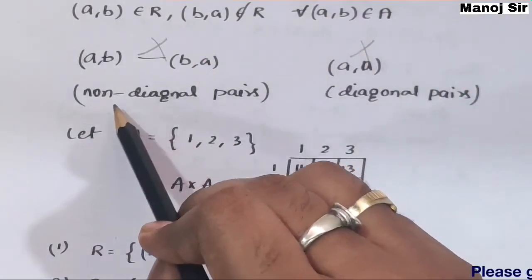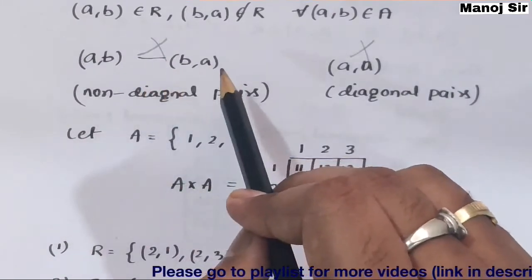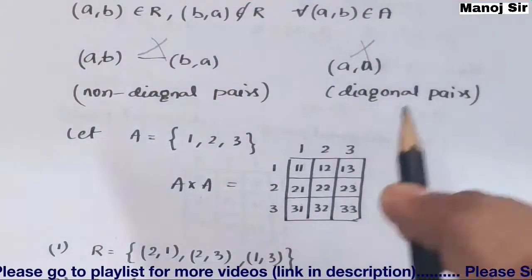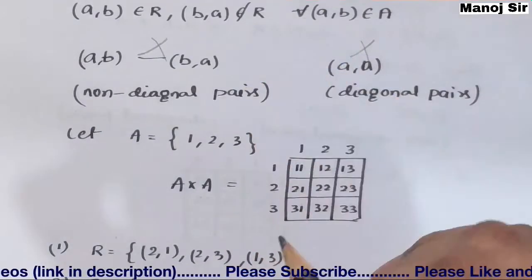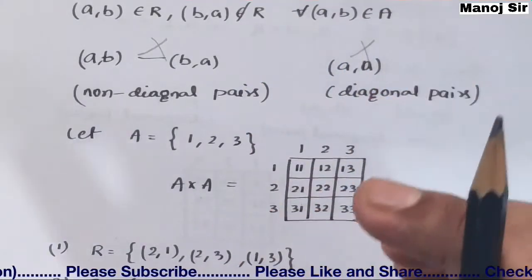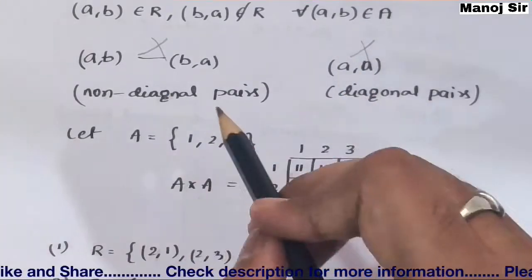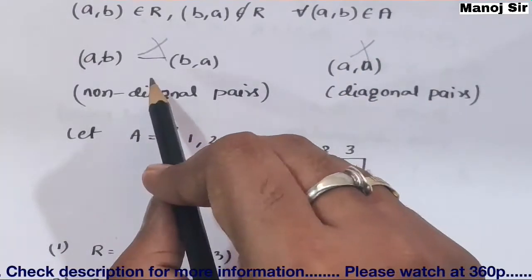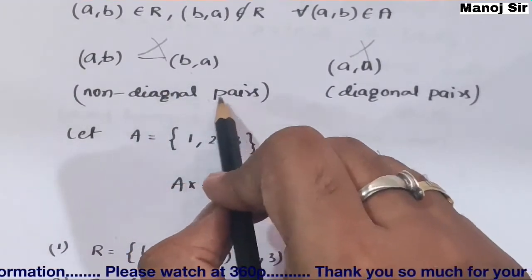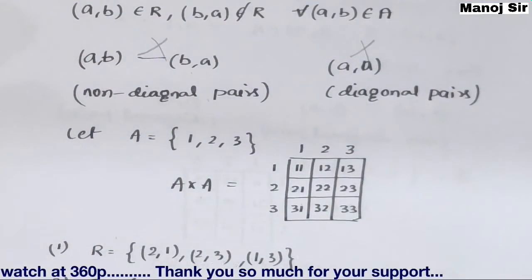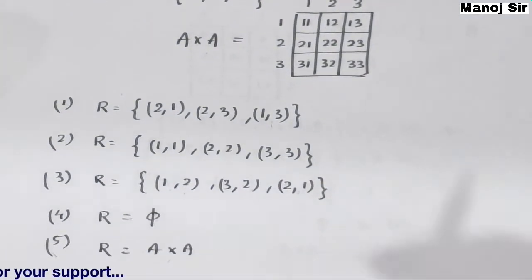For a relation to be asymmetric: diagonal pairs should not be present, and if there is a non-diagonal pair, then its symmetric pair should also not be present in that relation. Only then can we say the relation is asymmetric.